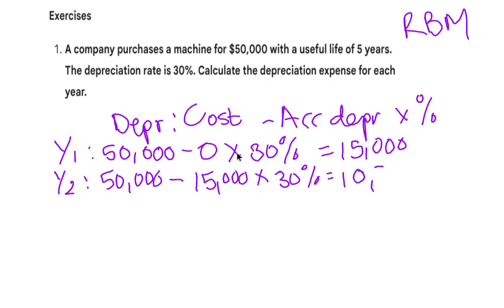Note that the depreciation is lower. When we talk about the reducing or diminishing balance method, your depreciation for the following years will never exceed the ones for the previous year — so it goes fifteen thousand, ten thousand five hundred, and it will go lower and lower.